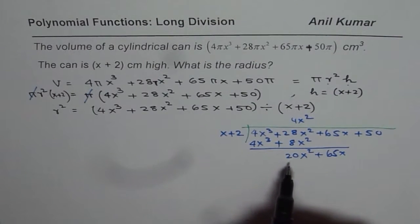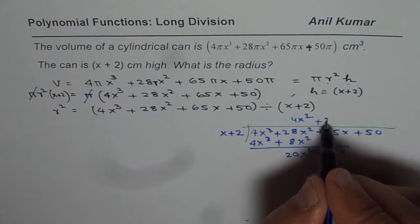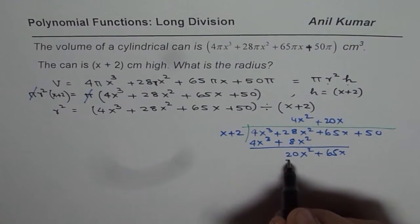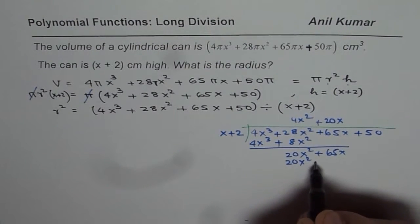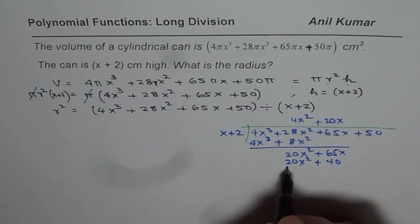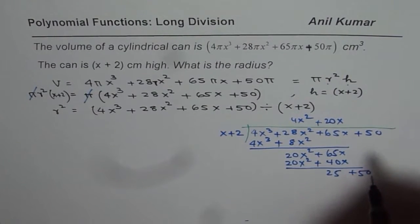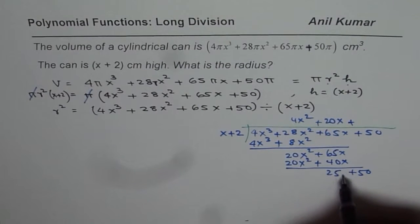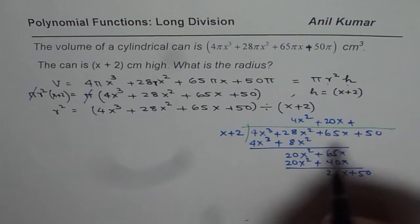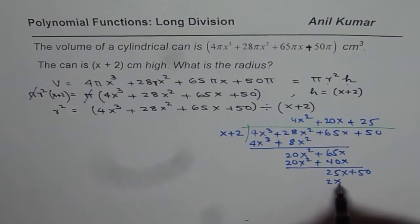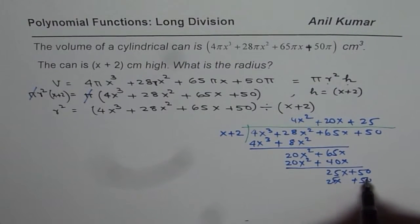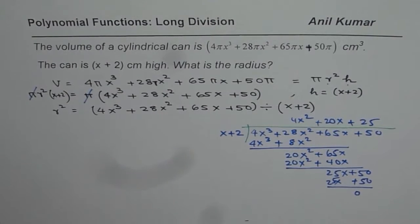Now you need to multiply by 20x, so you get 20x, that gives you 20x² + 40x. When you take away, you get 25x, bring down 50. Now multiply by 25, then you get 25x plus 50, and the remainder is 0.